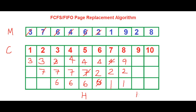The next one which wants to come in is 2, and as you can see 2 is already here, so that's a page hit. The cache stays 9, 2, and 1. The next one is 8, and 2 is now the oldest one, so we cancel out 2, write 8. The final cache state is 9, 8, and 1.